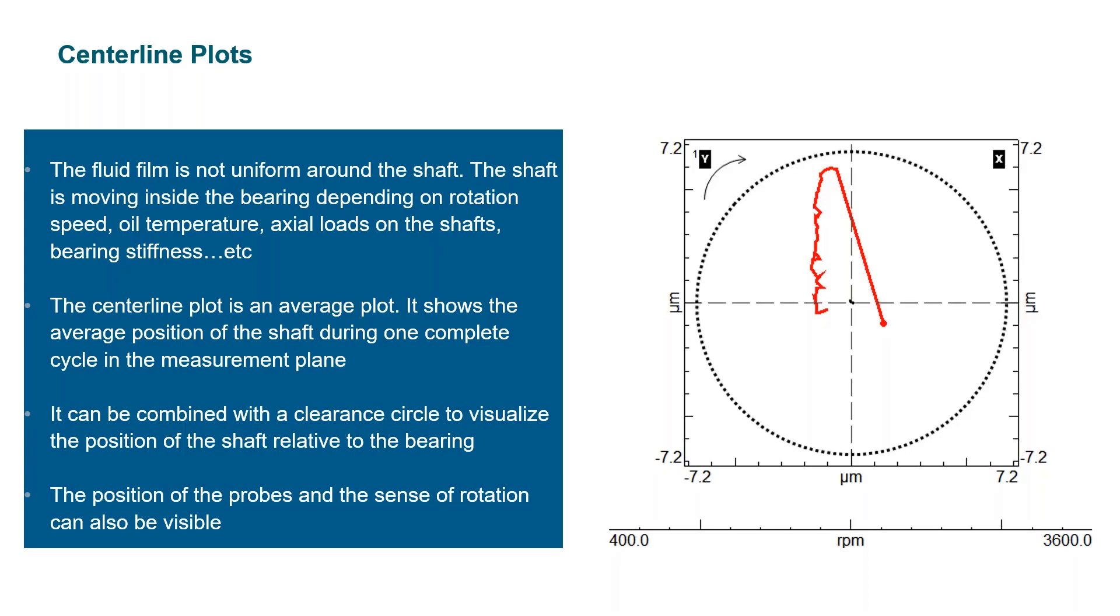What happens is that basically the fluid film around the shaft inside the bearing is not uniform and the shaft will be moving inside the bearing depending on many parameters, actual loads on the shaft, the bearing stiffness, temperature of the oil, rotational speed, etcetera.